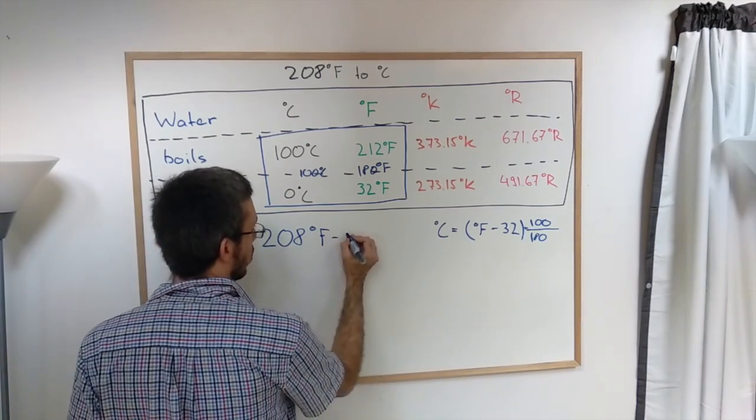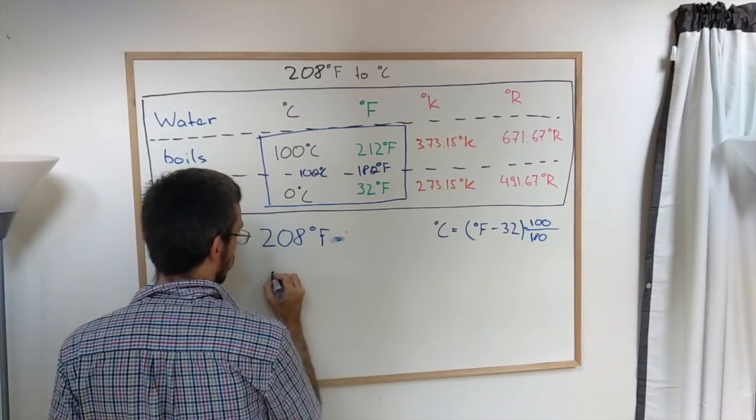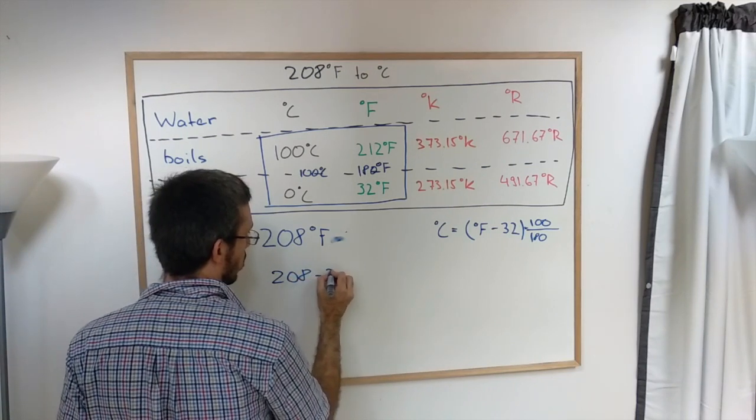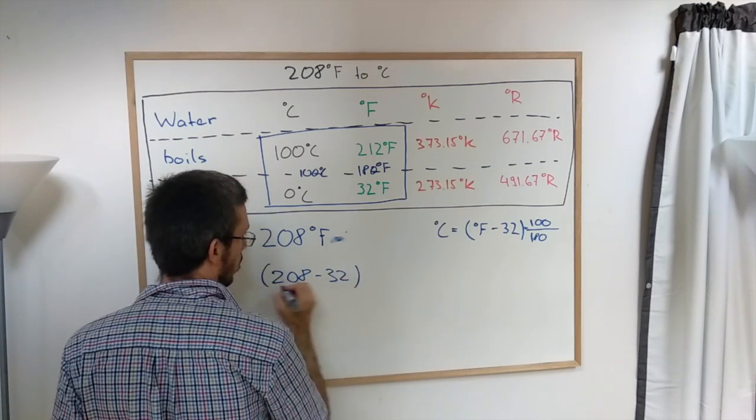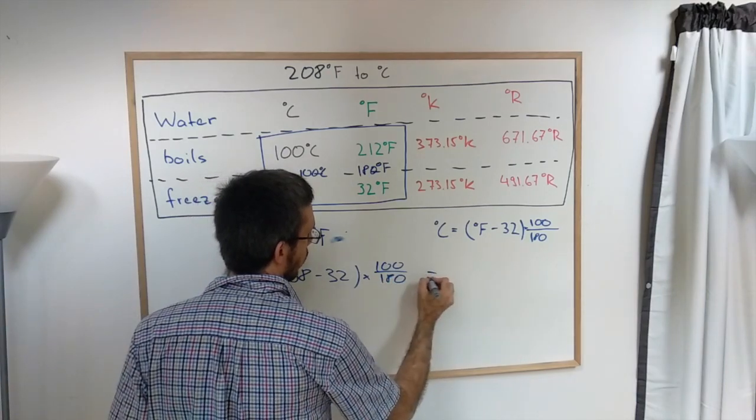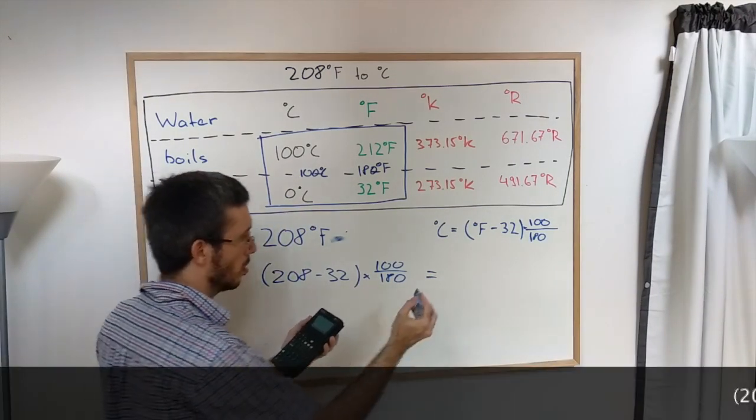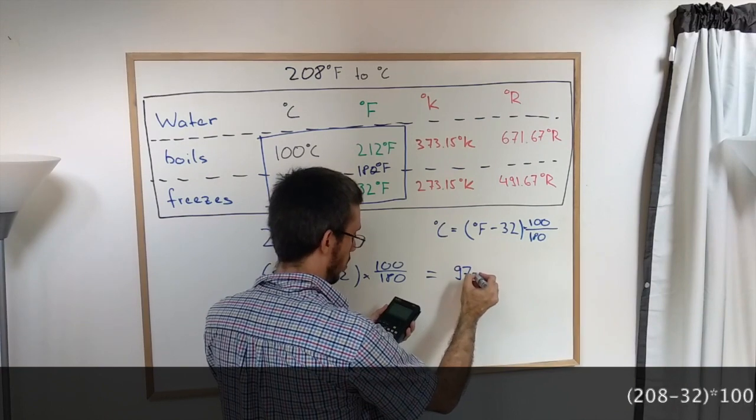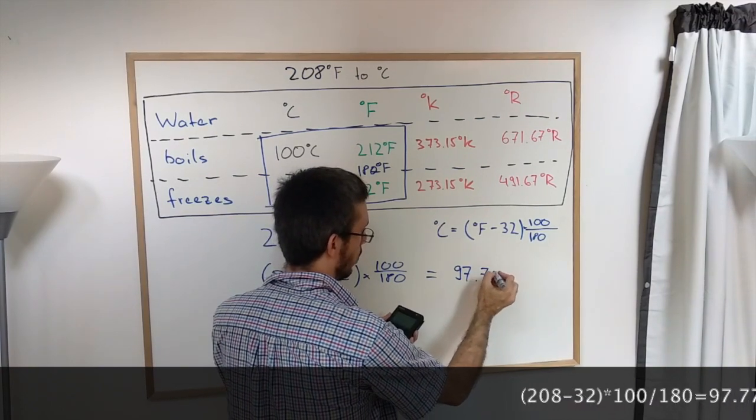So in our case minus 32, so 208 minus 32 times 100 over 180 gives me 97.7 degrees Celsius.